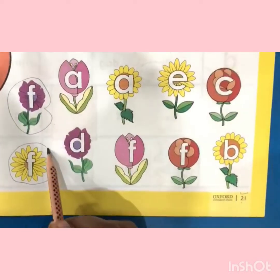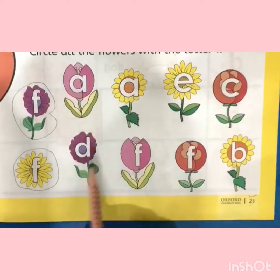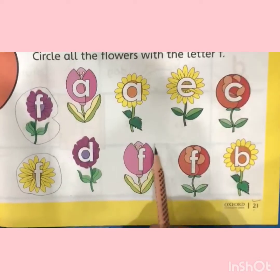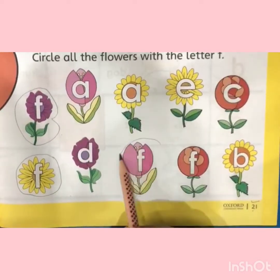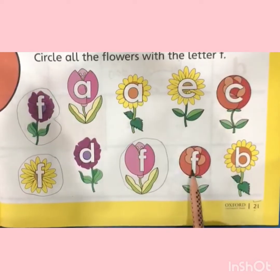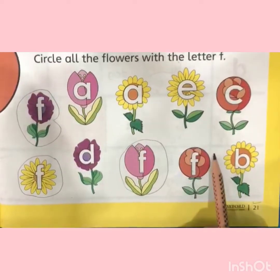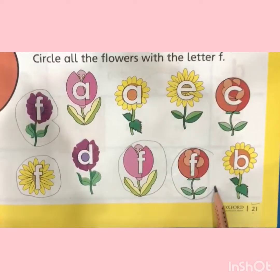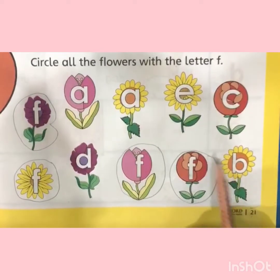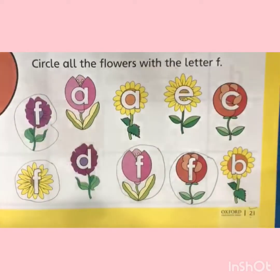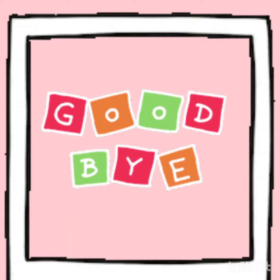Dear kids, look at the next one. This is not the letter F. This is F — now I will circle this flower also. This is also F, I will circle it. Kids, in the last flower there is no letter F. Try to practice this at home.